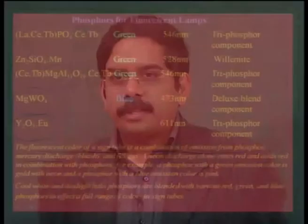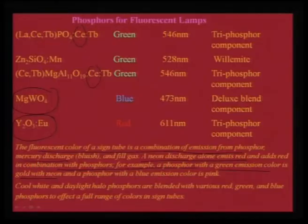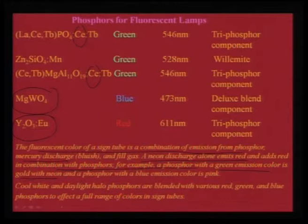If it is a mercury discharge the emission is dominantly blue; if it is neon discharge alone, it emits red, adding red in combination with phosphors. For example, a green emission colour appears gold with neon. So with a neon discharge you can get a different emission from the same phosphor compared to mercury discharge — these are being worked out as contrast combinations for mixing.